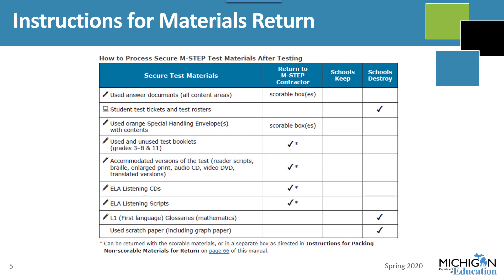That's a reason why you want to make sure that you inventory your materials when you get them. If you have anything on your packing list that's not included in your shipment, let us know as soon as you get your materials. Don't wait until after testing. If you have any issues with your inventory, send an email to mde-oeaa@Michigan.gov. Secure materials that need to be destroyed include test tickets and rosters, L1 glossaries for mathematics, and used scratch and graph paper.